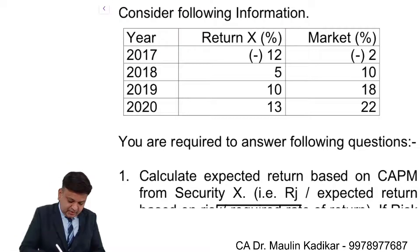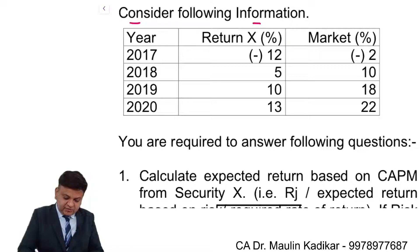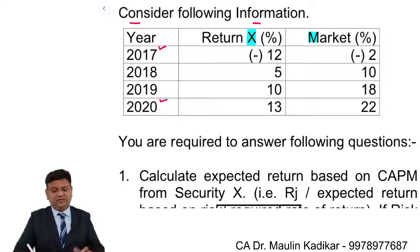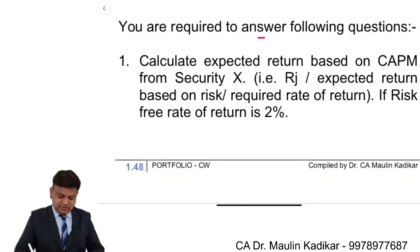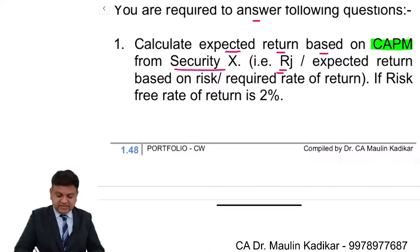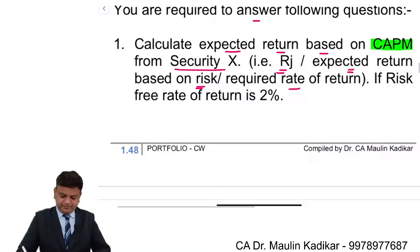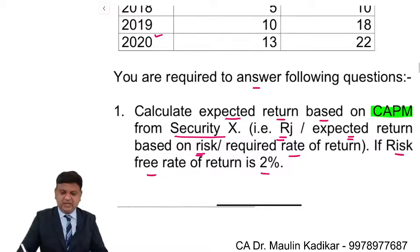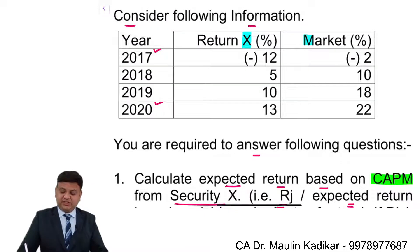Consider the following information. The return from security X and the return on the market portfolio are given for years 2017 to 2020. You are required to answer the following questions. First, calculate the expected return based on CAPM for security X — that is RJ, or the required rate of return — if the risk-free rate of return is 2 percent.